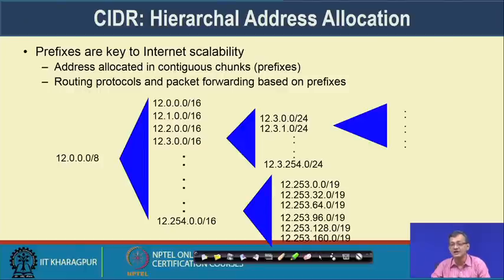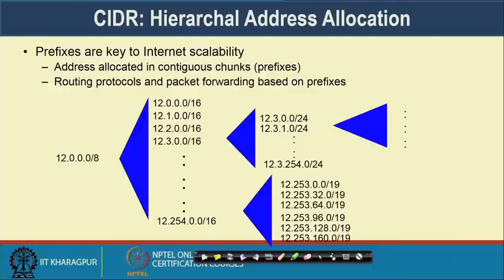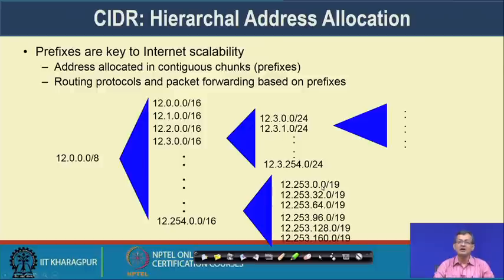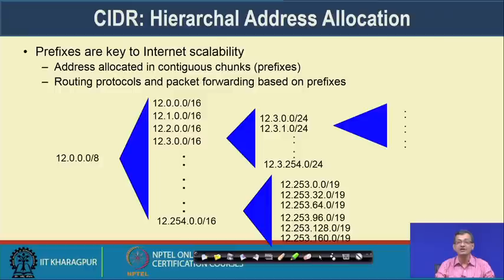Prefixes are key to the internet scalability challenge. Addresses are allocated in contiguous chunks called prefixes, and routing protocols and packet forwarding are based on these prefixes. While routing, we route between these address prefixes, allowing different levels of hierarchy. This allows managing IP and routing/forwarding tables in routers much more efficiently.